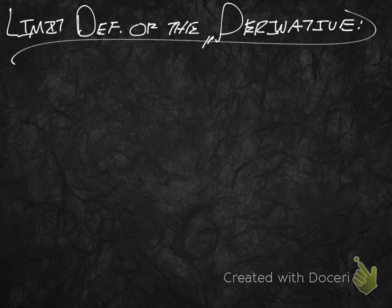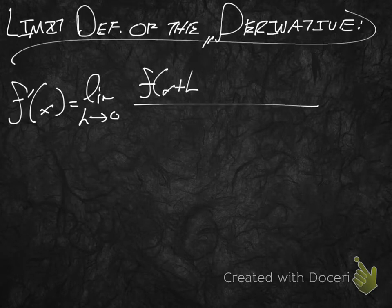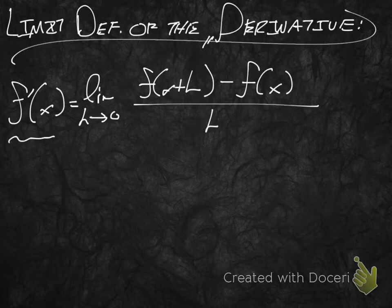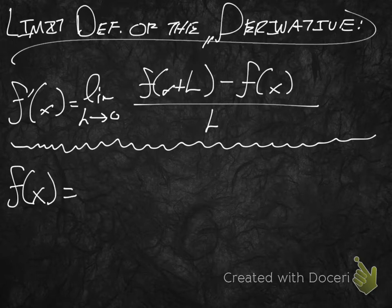The limit definition of the derivative states that f prime of x is equal to the limit as h approaches 0 of f of x plus h minus f of x, all over h. And I want to use this to evaluate the function f of x equals 4 minus radical x plus 3.